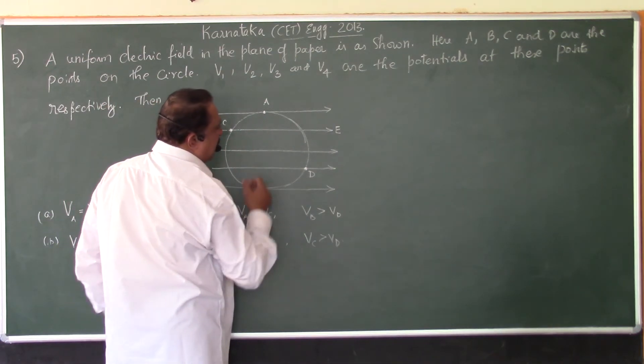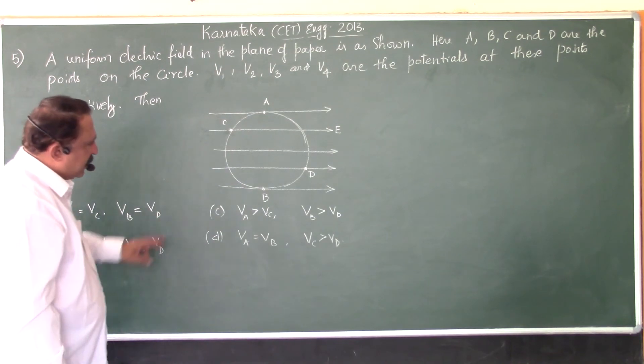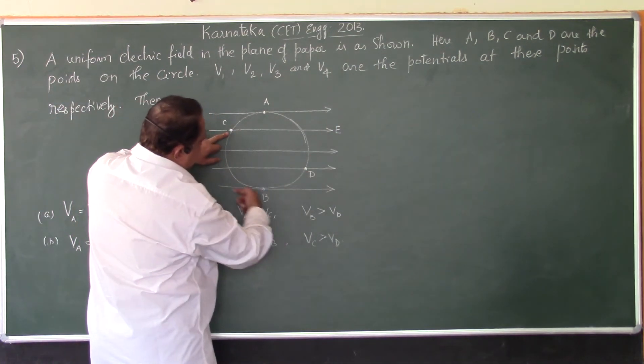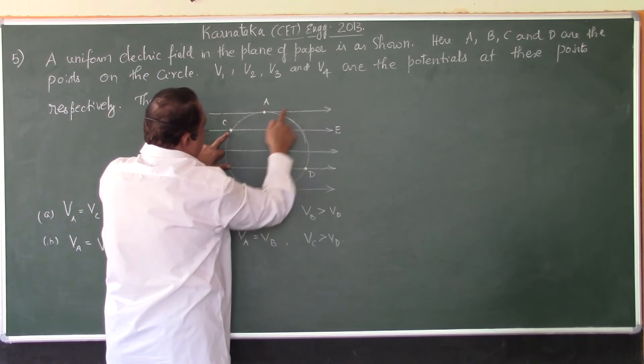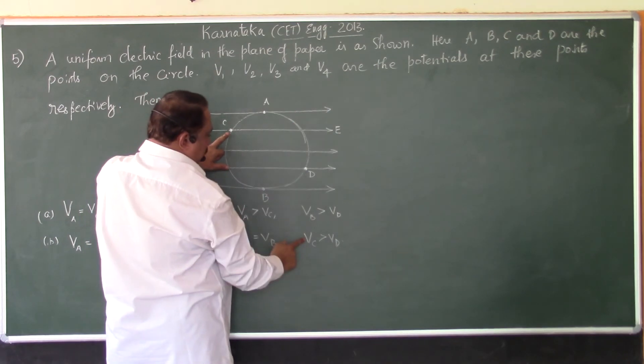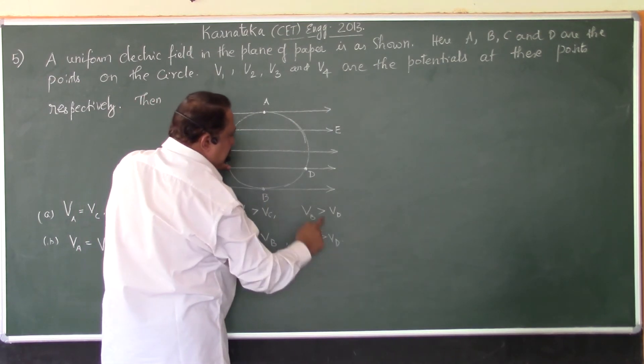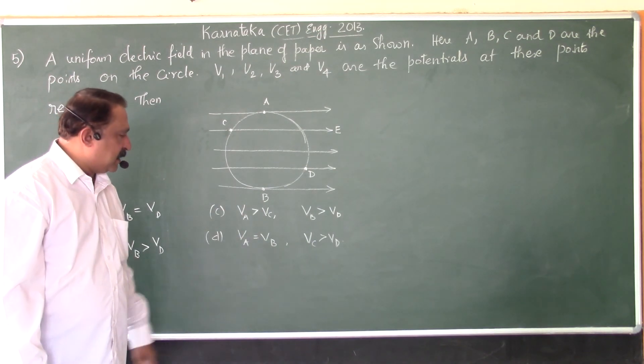The reason is, if the points are at equidistant from any point in the uniform electric field, then the electric potential at these two points will be same. If a point is farther in the direction of the field, this is the direction of the field. Therefore, electric potential at C is greater than D. Therefore, VC is greater than VD. So, the right answer is option D.